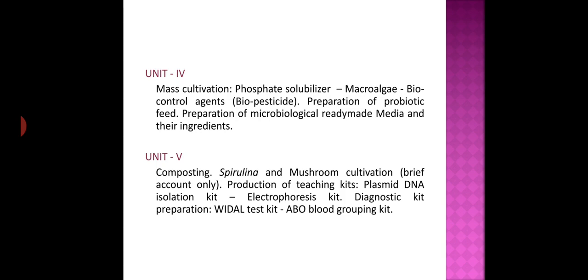Unit 4 explains mass cultivation of phosphate solubilizers, macroalgae, and biocontrol agents, i.e. biopesticides. This unit also explains preparations of probiotic feed and microbiological ready-made medium.